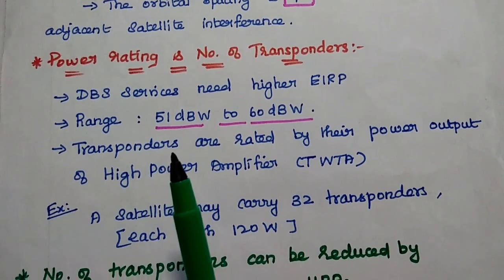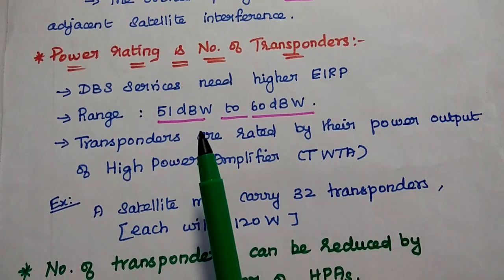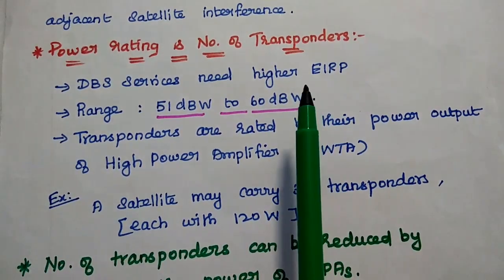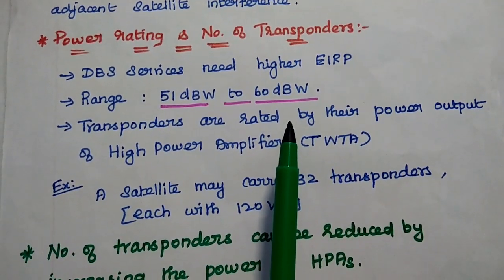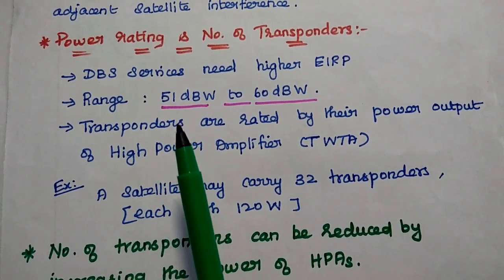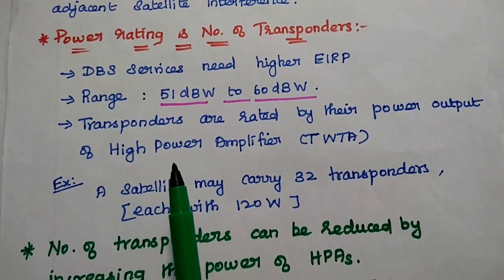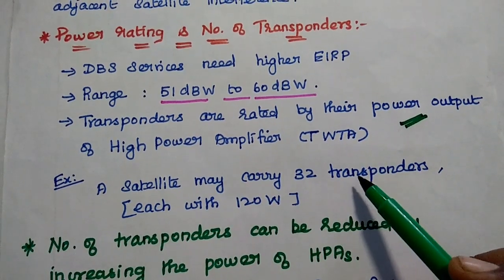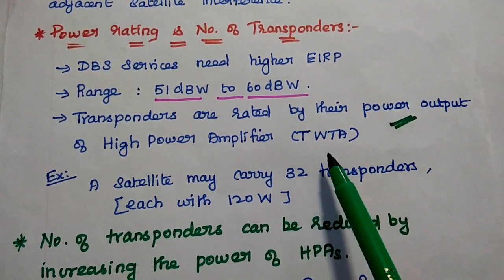The next parameter is power rating and number of transponders. Direct broadcast satellite services require higher EIRP — equivalent isotropic radiated power — that is the transmitted power for the services. Its range is from 51 dBW to 60 dBW. The transponders are rated by their output power of high power amplifiers like TWTA, which means traveling wave tube amplifier.